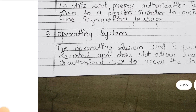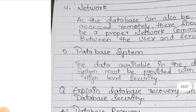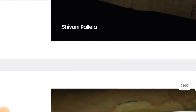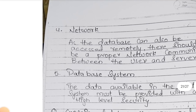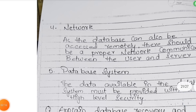Through that also data can be leaked. Operating system is nothing but unauthorized users when they are trying to access the data — that time the operating system will work. Next, network — we will transfer data through the network, signals through the phone.